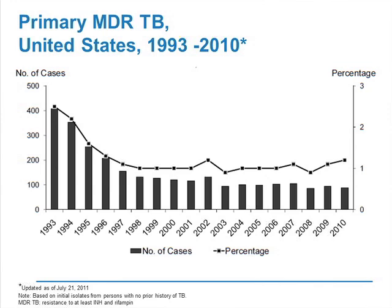Multidrug-resistant TB — in the mid-90s this seemed to be increasing. Approximately 2% of cases in the early 90s were MDR-TB, defined by resistance to both INH and rifampin. There's been a slight trend downward — we've been pretty steady at about 1% MDR-TB in the U.S. for the last decade.